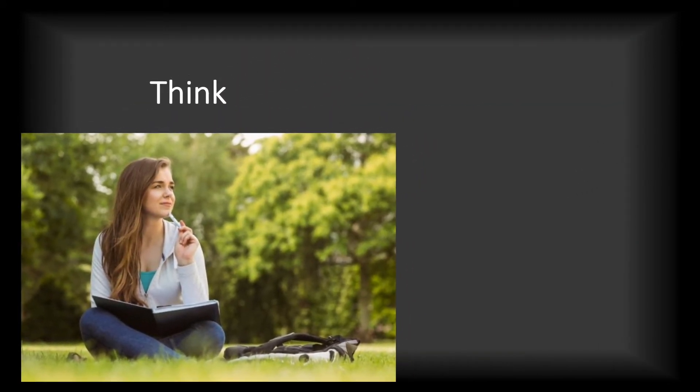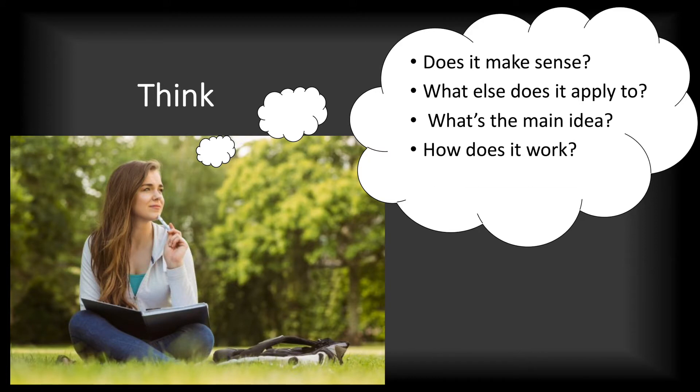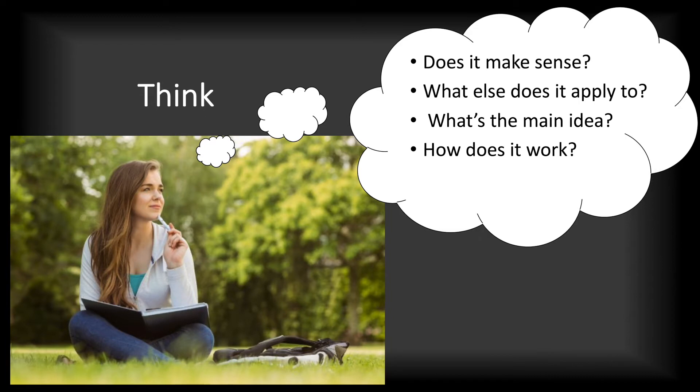The next part is key — you actually have to think about what that information is. Ask yourself questions like: does that concept make sense? What else would that concept apply to? What's the main idea and how does it work? A really good way to test whether you understood it is: could I explain this information to someone else? After seeing information the first time, the answer is probably going to be no — and that's totally okay. So what you have to do next takes some effort. Go back to that information, look for the key parts, go over the definitions, go over the concepts, think about what it will apply to, and keep interacting with this information until it makes sense. Once you feel you could explain this concept to someone else, you've learned that material.